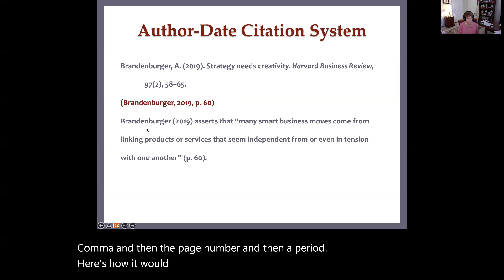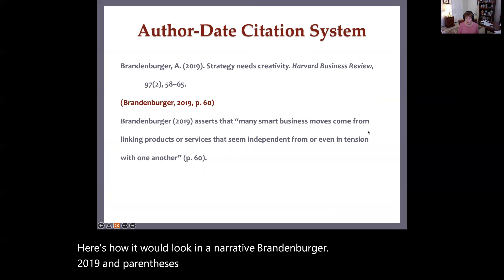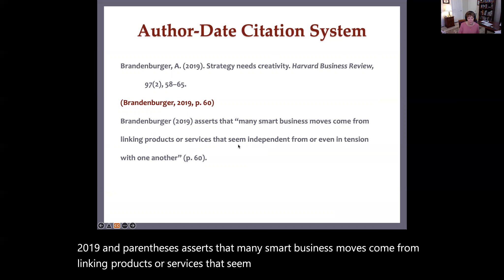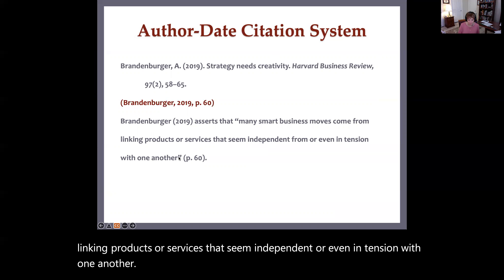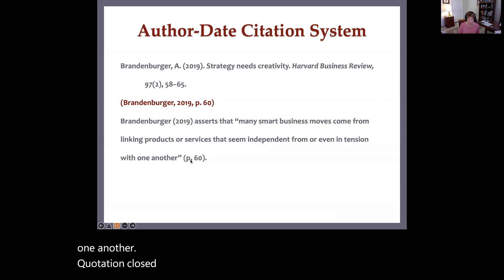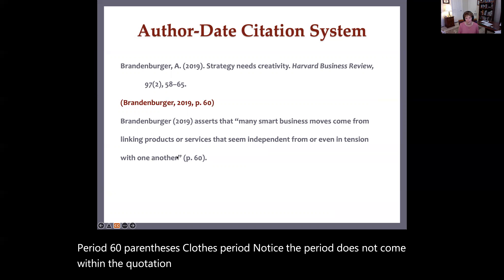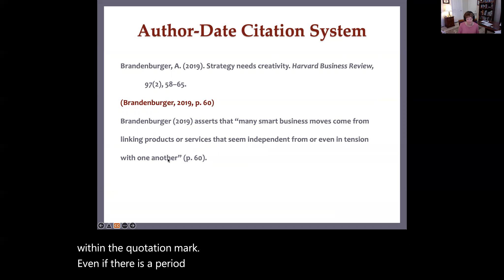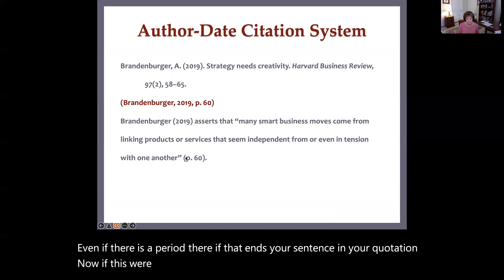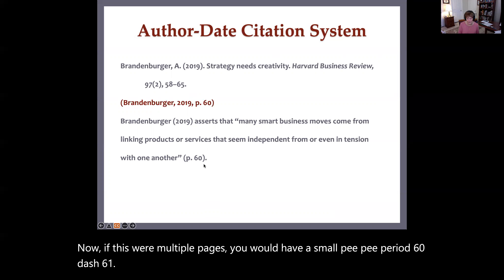If it were a parenthetical citation at the end of a sentence, you'd have a period after the closed parenthesis. Notice: Brandenberger, last name, comma, 2019, comma, then a page number, then a period. For a narrative citation, it would read: Brandenberger (2019) asserts that many smart business moves come from linking products or services that seem independent from or even in tension with one another. Page citation: (p. 60). Note the period comes after the closed parenthesis, not within the quotation mark. For multiple pages, use (pp. 60–61).